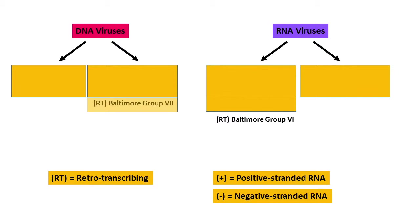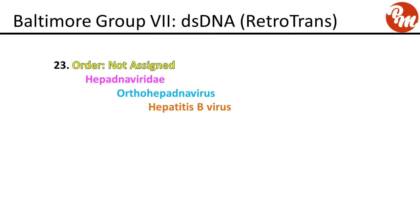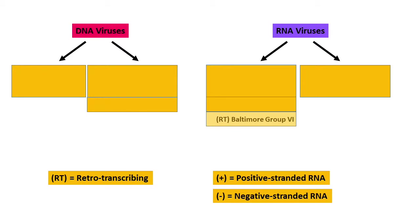Now back to DNA viruses, Baltimore Group 7: the retrotranscribing double-stranded DNA viruses. Order not assigned, family Hepadnaviridae, genus orthohepadnavirus. The virus in this group is hepatitis B virus.